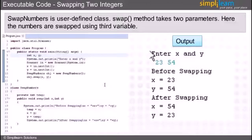On line number 14 we create a user defined class that is swap numbers. In this class we use temp as a third variable. On line number 17 we create a method that is swap method which actually swaps two variables.